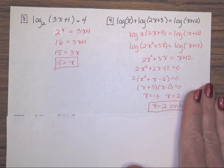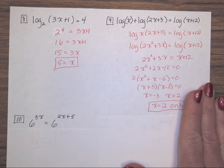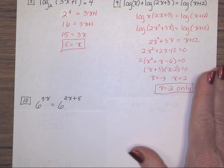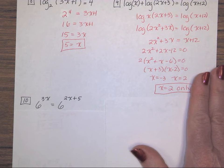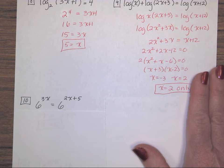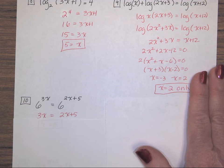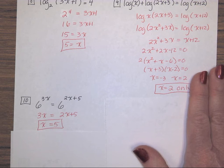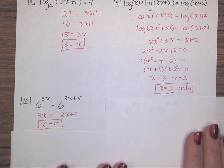Number 10. I have 6 with an exponent of 3x equals 6 with an exponent of 2x plus 5. If I take log base 6 of both sides, it cancels that base of 6 and leaves the exponents equal to each other. Combine like terms, I subtract 2x and move it over. x is equal to 5. Well, I've got a good answer.